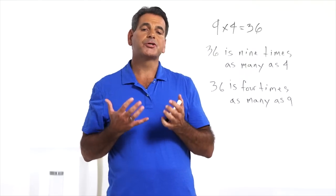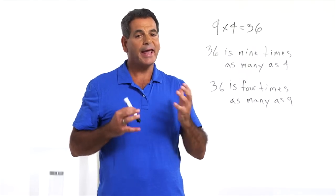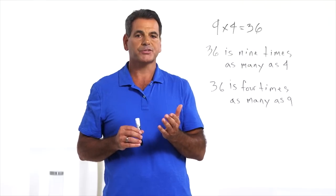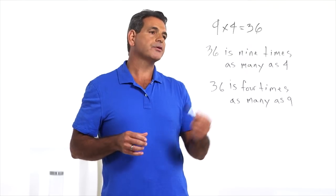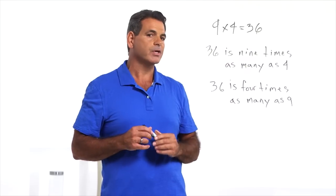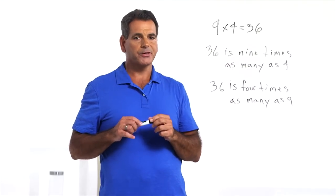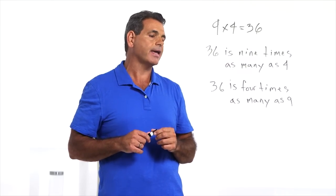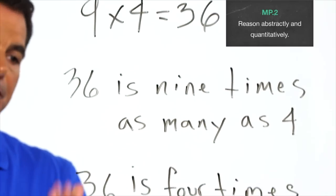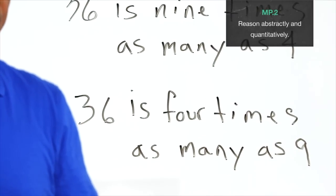This problem is a good example of the application shift in Common Core. Now students need to be able to read a problem and immediately be able to write the expression 9 times 4. In this case, the answer is 36. Students also need to be able to understand this equation as saying 36 is 9 times as many as 4 and 36 is 4 times as many as 9.